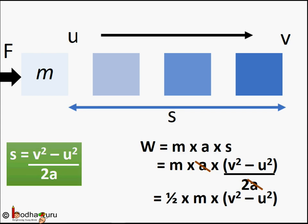So finally we get W = m × a × (v² - u²)/2a. Thus W becomes equal to half of mass multiplied by (v² - u²).